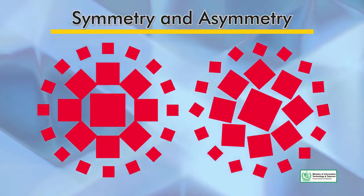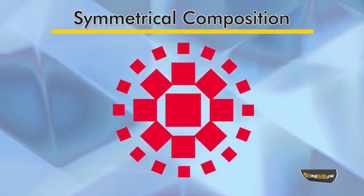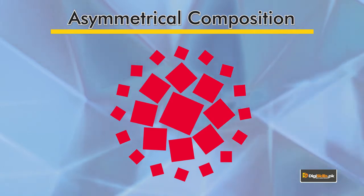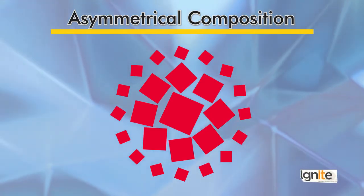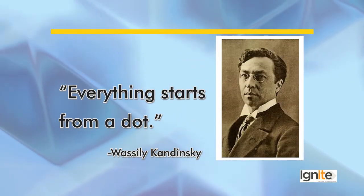This is a small but important concept in design. When dots are arranged in a particular sequence, we call it a symmetrical composition. When dots are arranged differently — not in a regular sequence — we call it an asymmetrical composition.